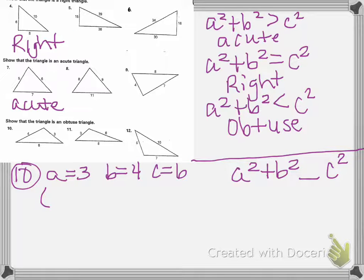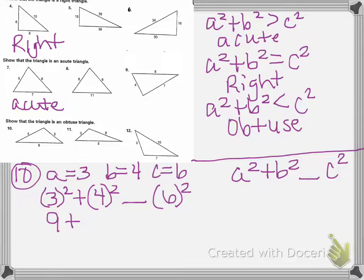So we're plugging in our numbers for our letters. So we have 3 squared for A, and then B is 4, we don't know our sign, C is 6. 3 squared is 9, plus 4 squared is 16. We don't know our sign, 6 squared is 36.